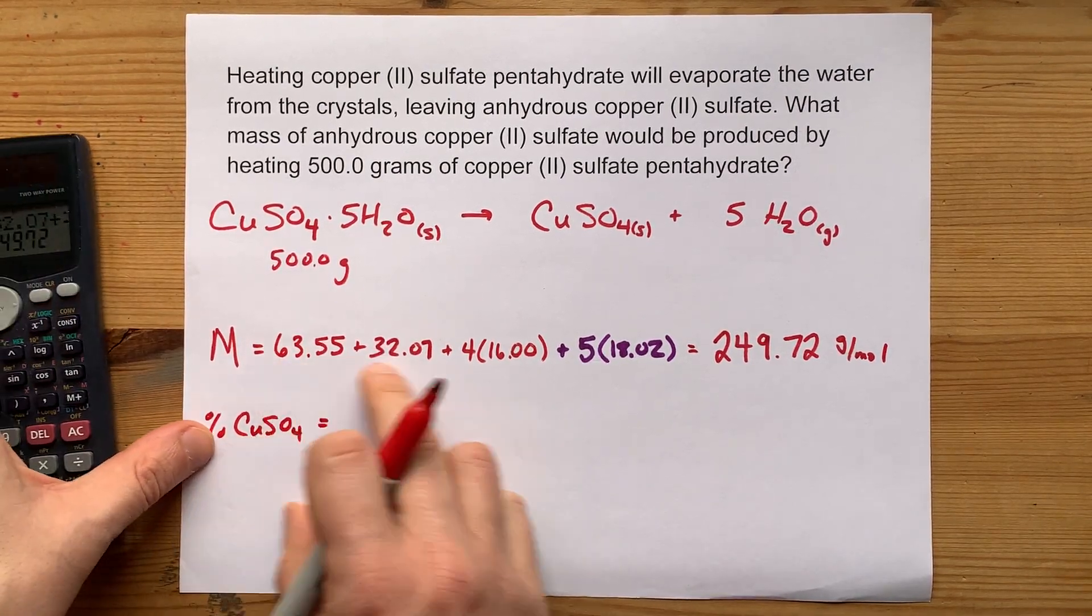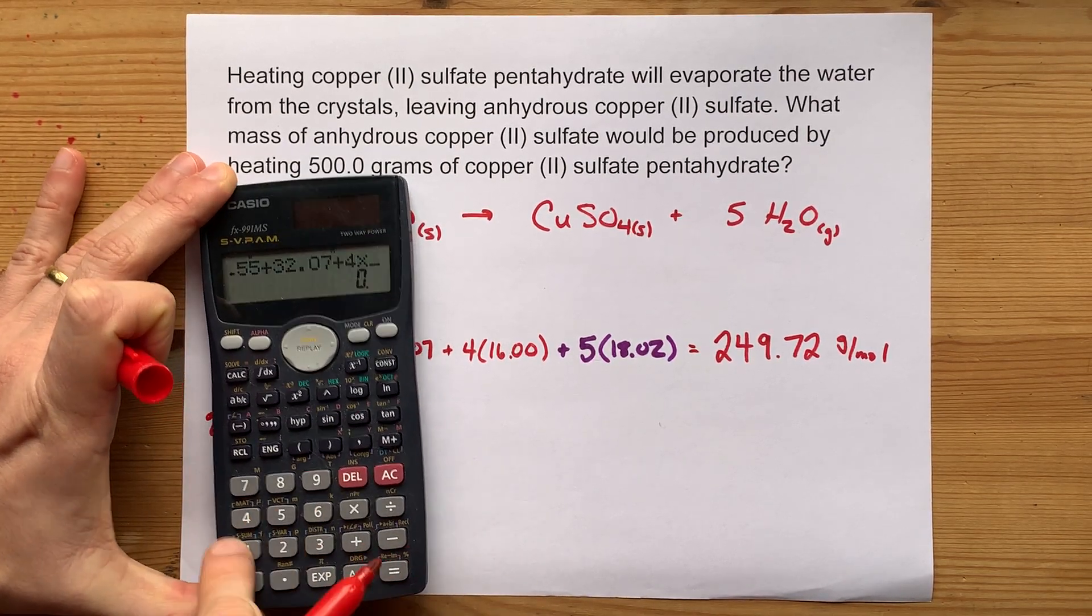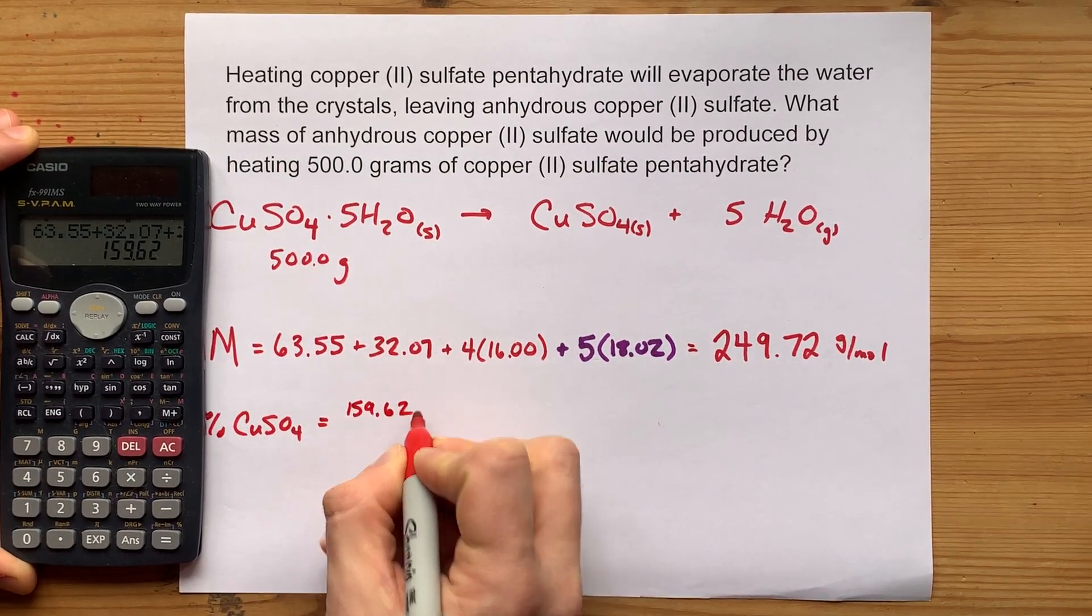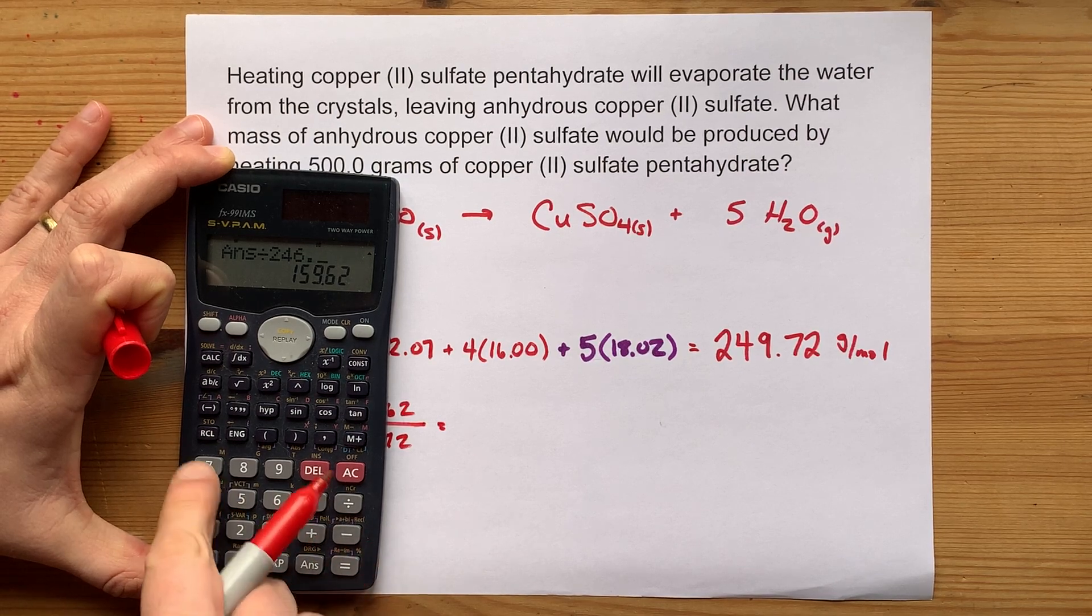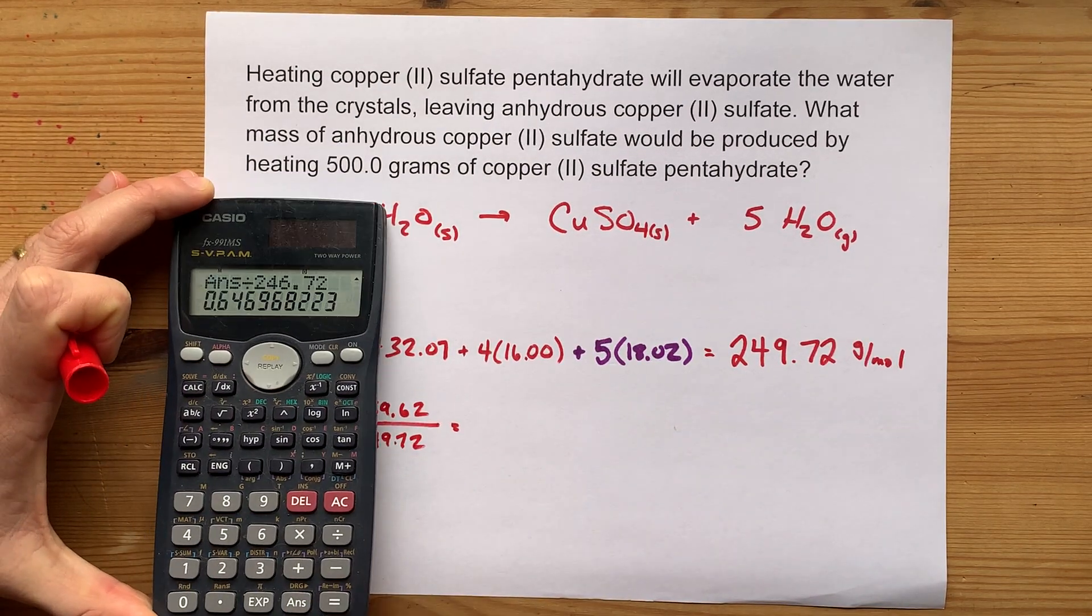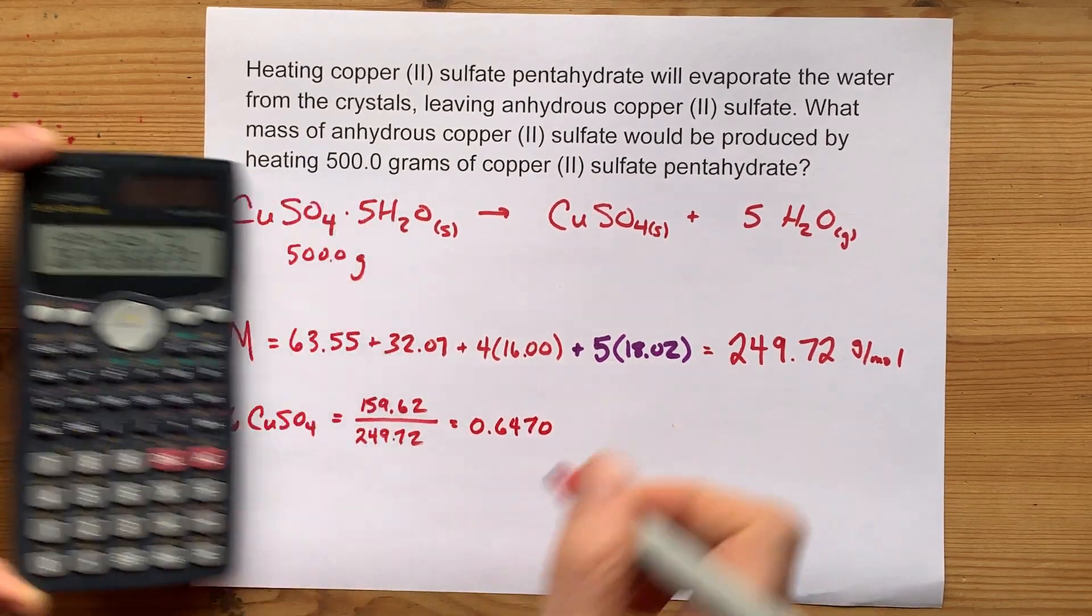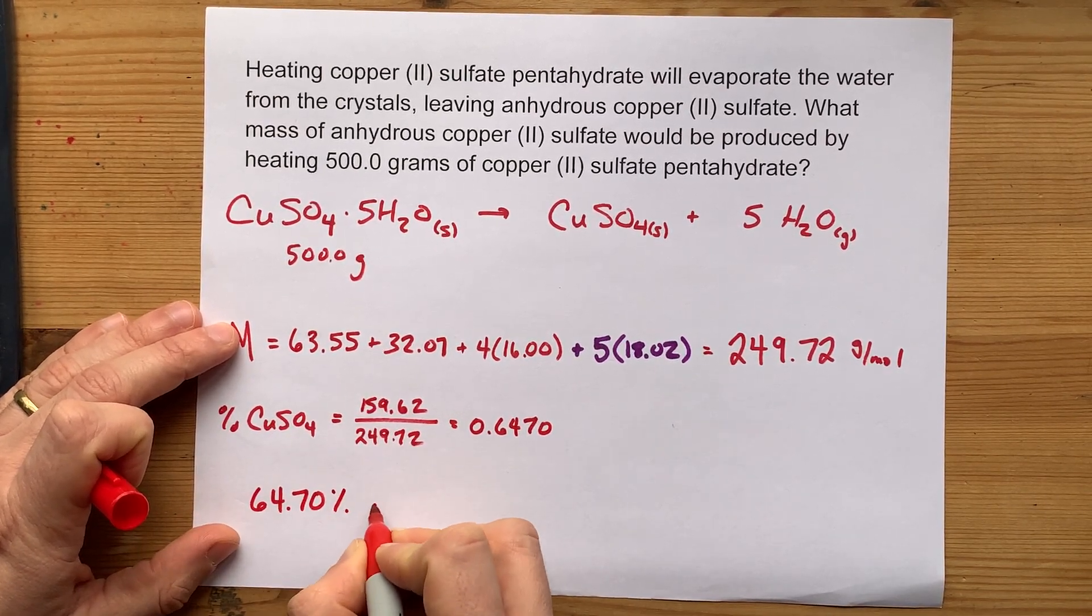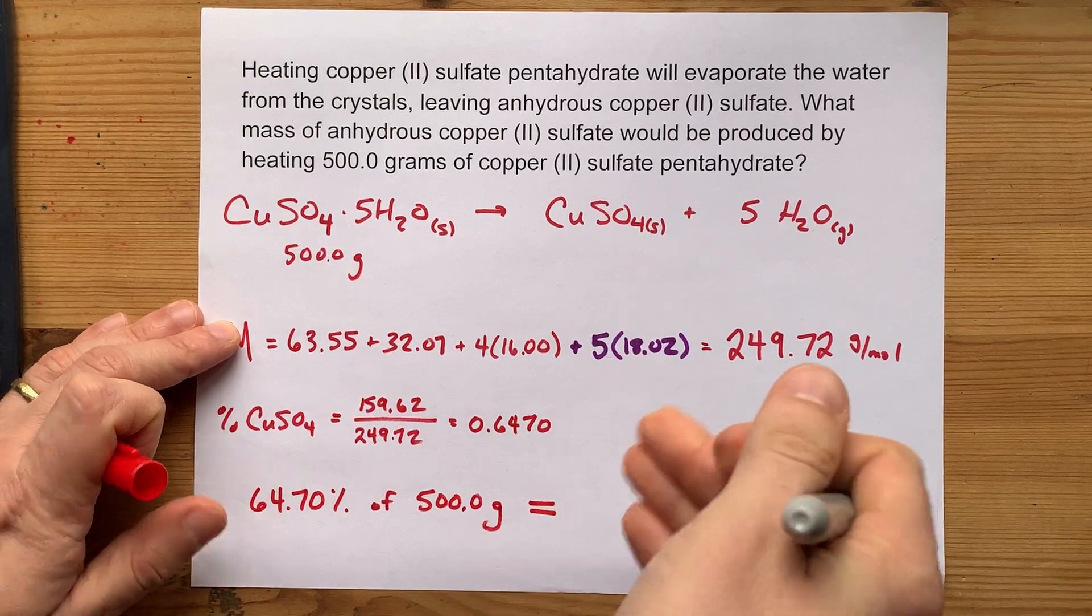The contribution of CuSO4 was 63.55 plus 32.07 plus four sixteens. It was 159.62 out of the entire 249.72. If you divide that contribution of anhydrous copper sulfate by the mass of the whole compound, you learn that it was 64.70% anhydrous. What that means is that you want 64.7% of 500 grams to get the mass of dry stuff that was left.